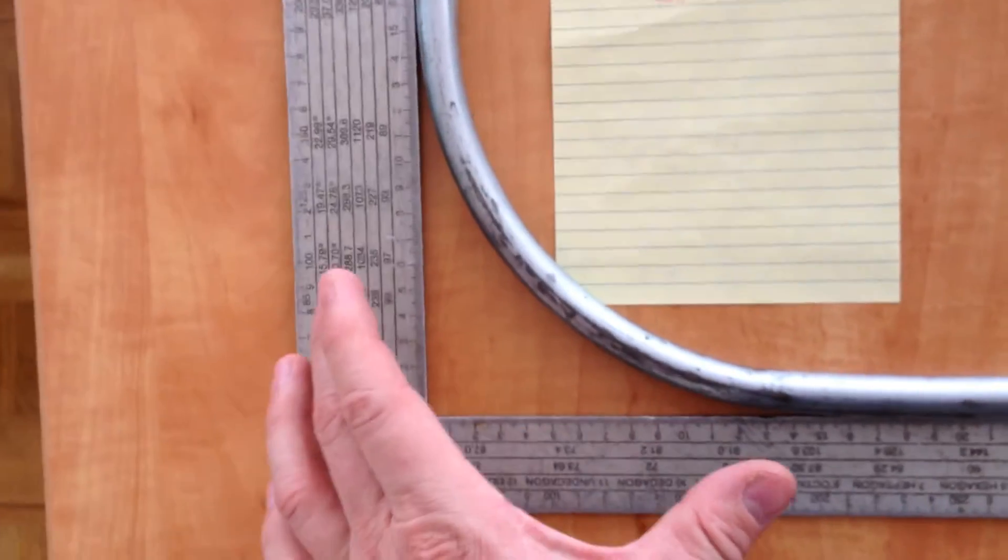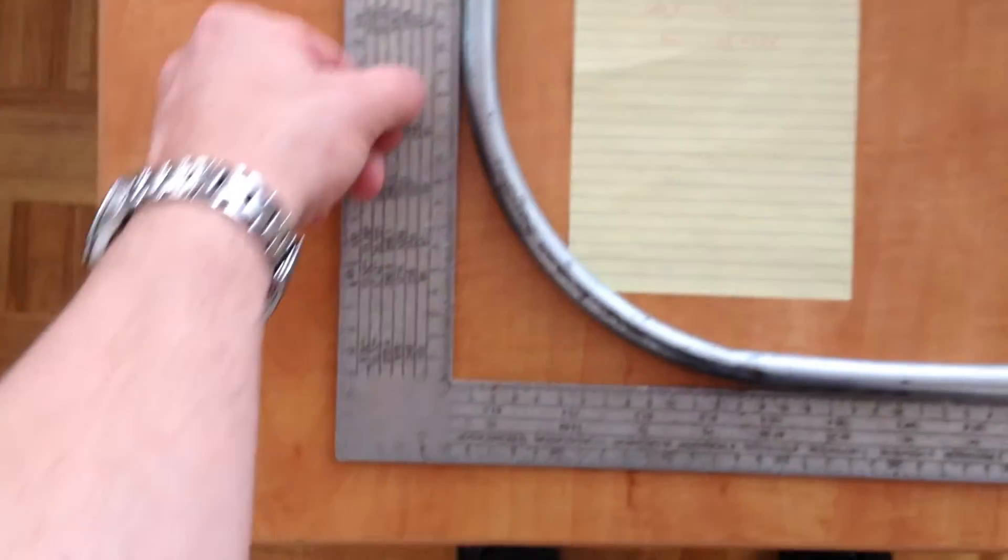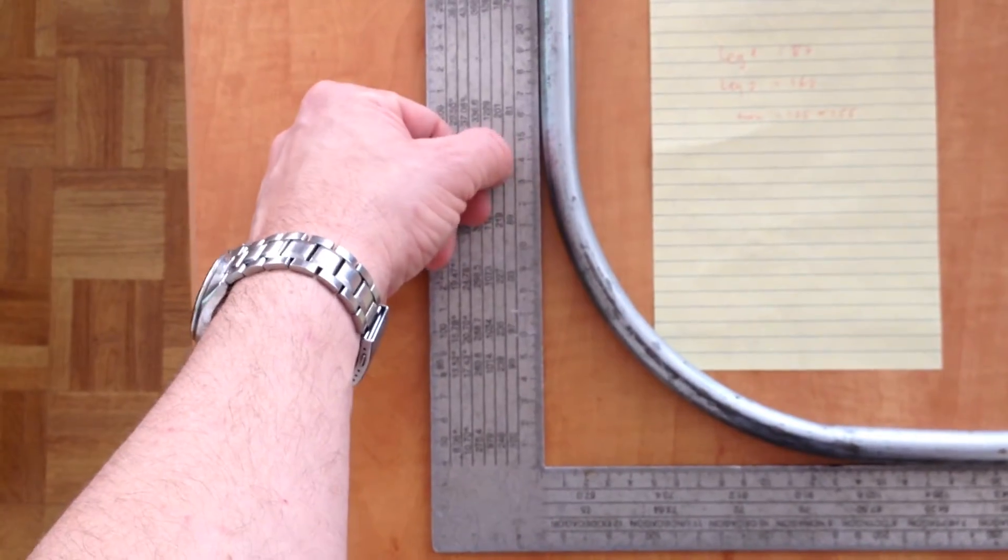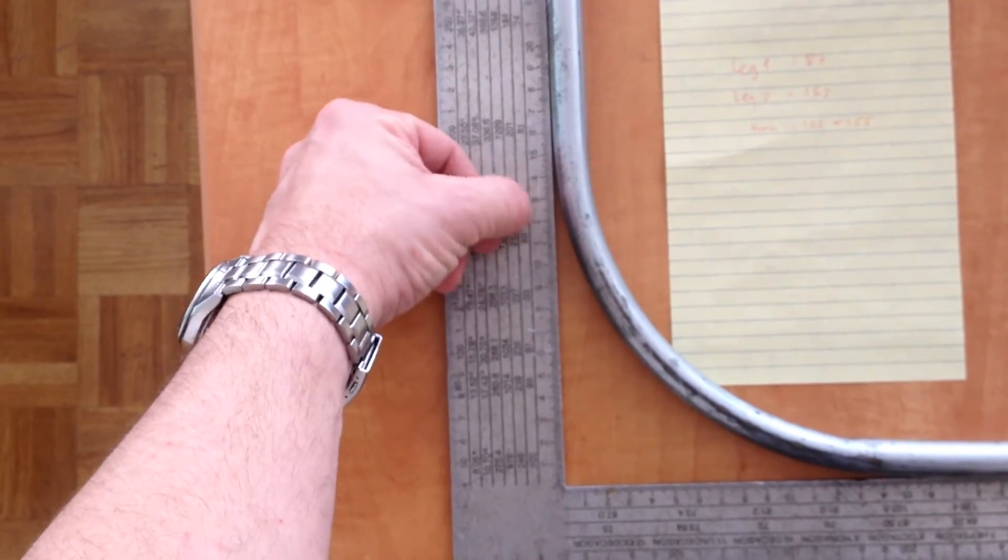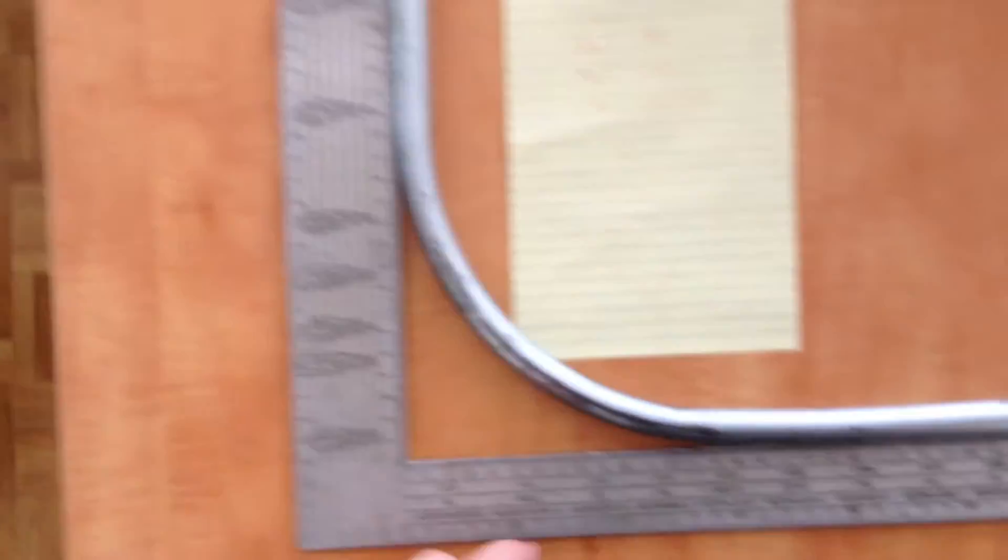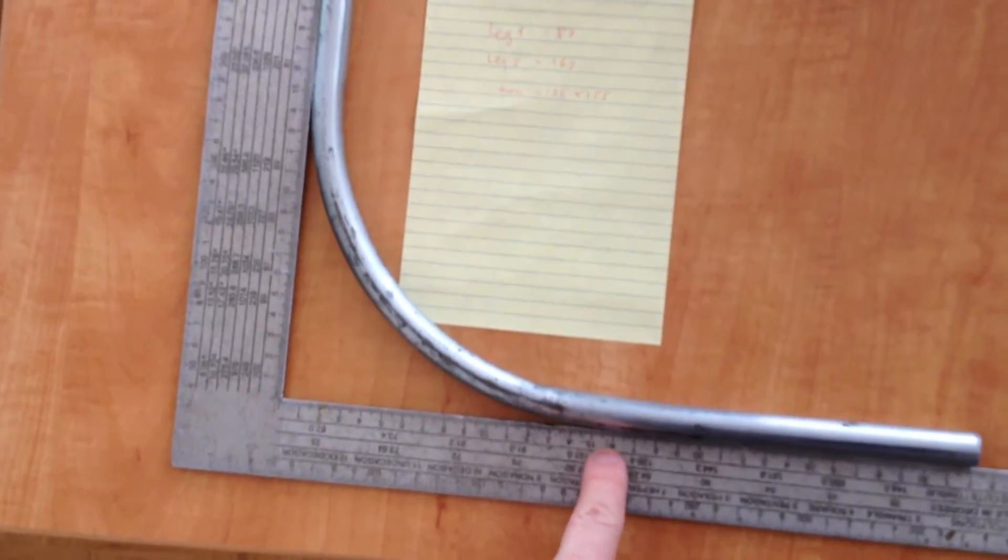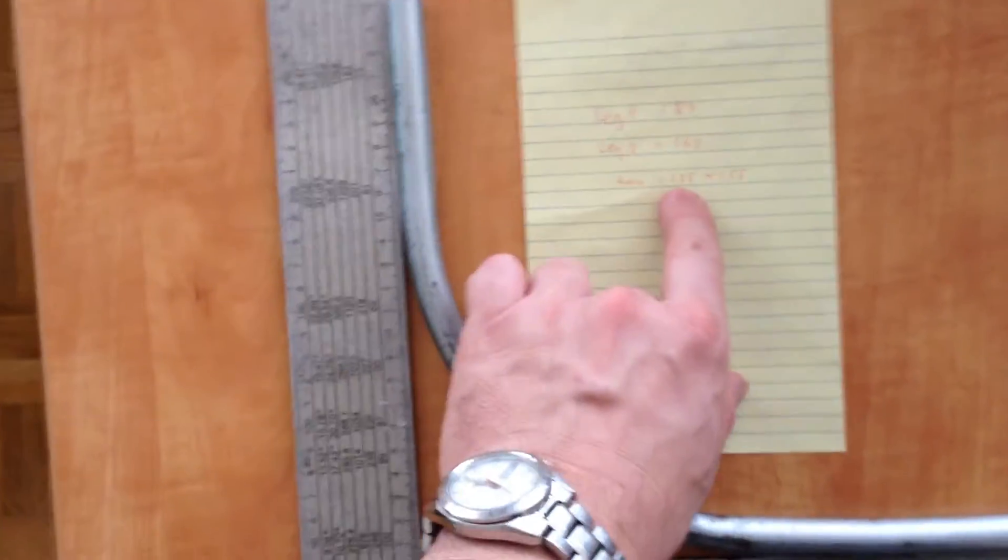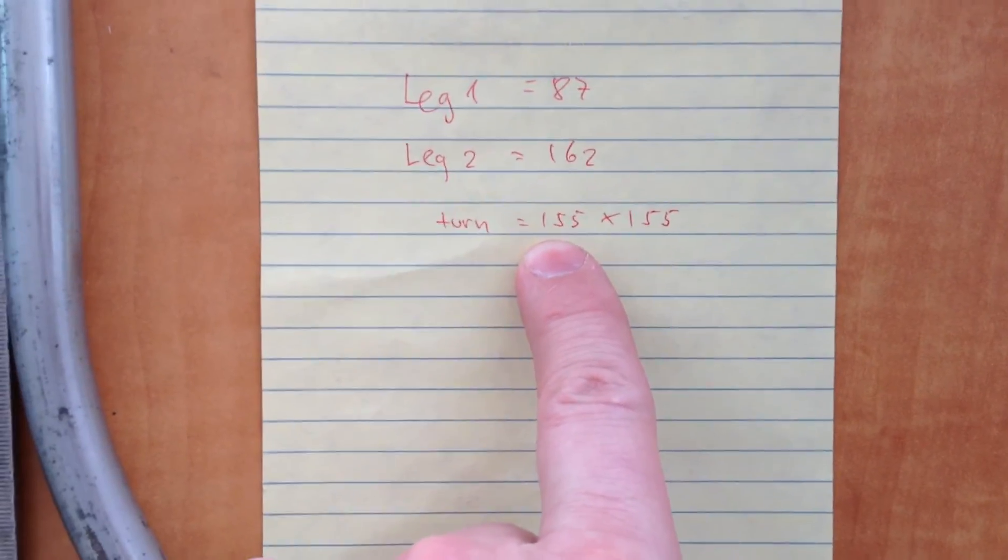We know that it's a square corner here, but not only that it fits the square, it also matches the numbers. Here where the bend starts going away from the pipe, it's the 155mm mark there - 140, 150, 155. And the same on this one, the bend starts at 155 there. So we know that this turn could be described as a 155x155 turn.